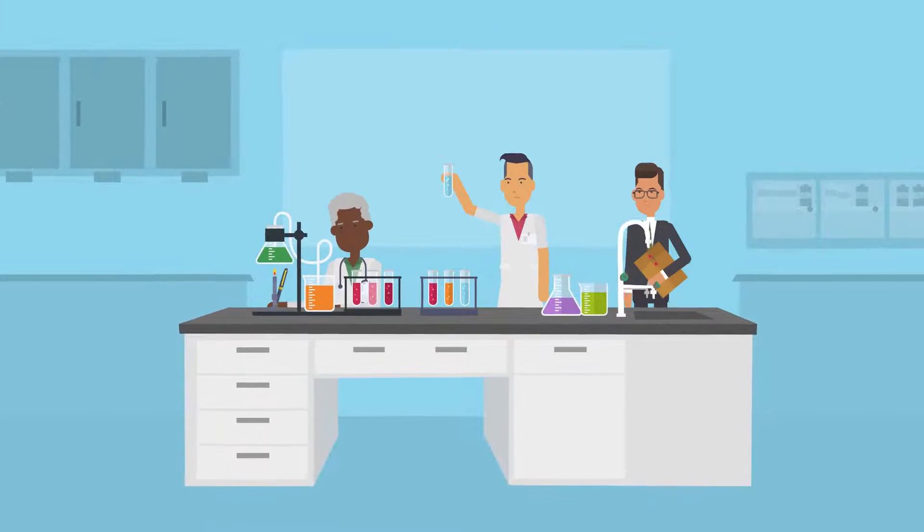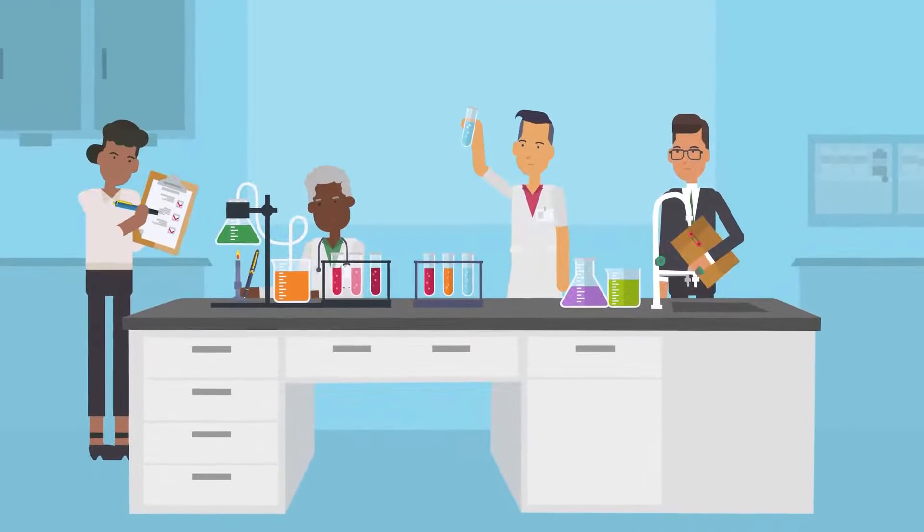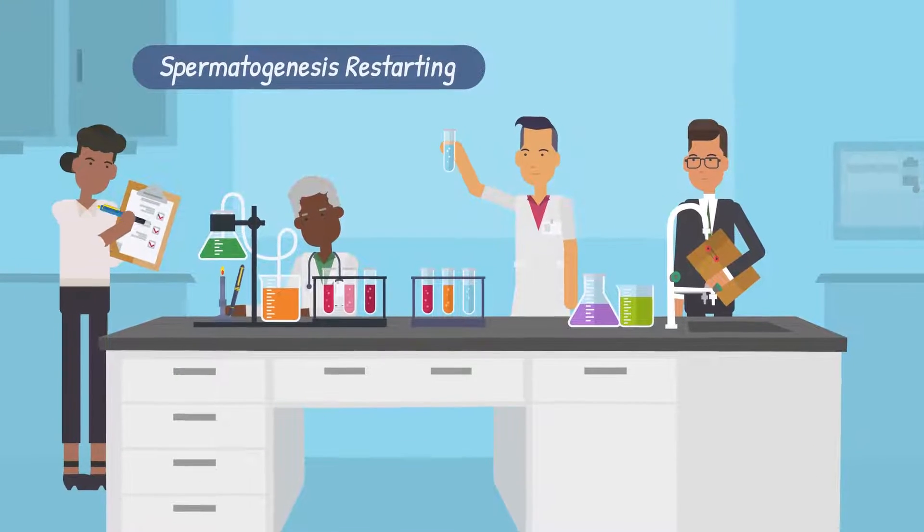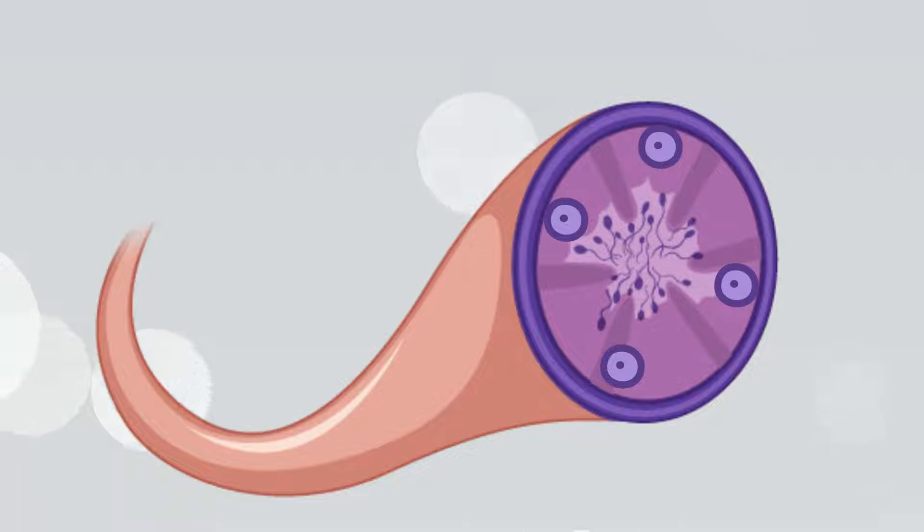Prolistem is a supplement designed to support primary testicular failure by a unique mechanism called spermatogenesis restarting. In our research using animal models, we found that testosterone blocks spermatogonia stem cells in the early stages of sperm production.